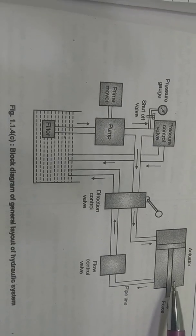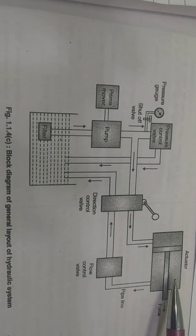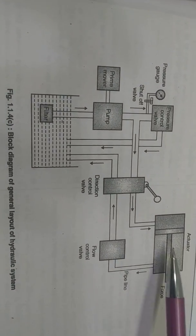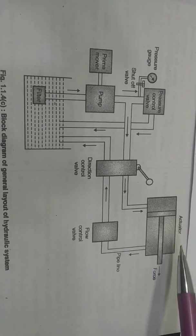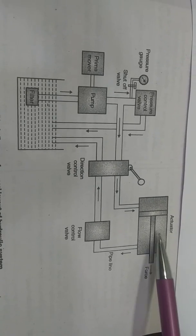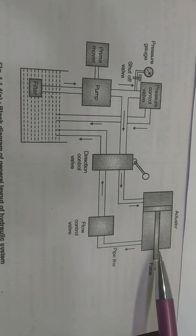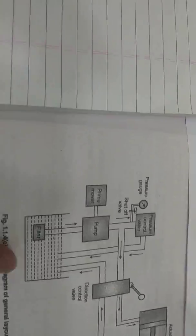The last component of the hydraulic system is the actuator. The actuator is a mechanical device which converts the oil energy into mechanical energy. A linear actuator is used here, and we can obtain the reciprocating movement of this linear actuator in the hydraulic system. These are the components of the hydraulic system. Next we will see the components of the pneumatic system.